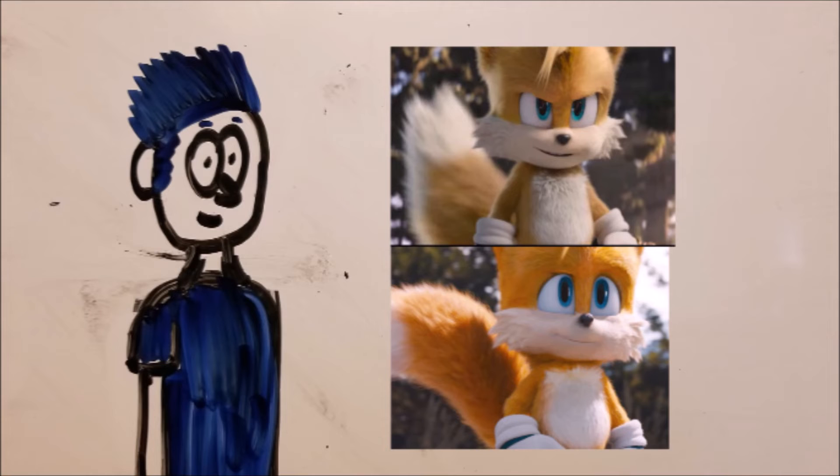And then we see of the end credits scene with Tails coming to find Sonic. Now Tails does look a little bit different compared to how he looked in the first film near the end of the post-credits scene. There is a little bit of differences here and there but I still think he looks fantastic. We also get a good look at the tornado plane which appeared in the second game.